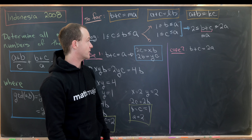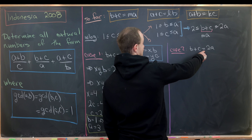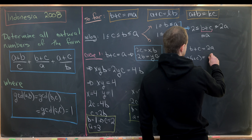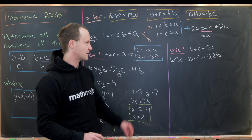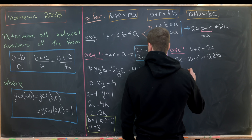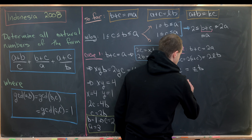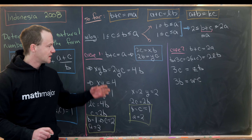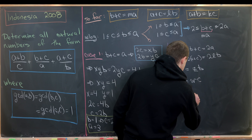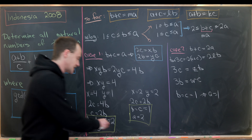Now for Case 2, B+C = 2A. Adding 2C to both sides gives B+3C = 2(A+C) = 2L·B, so 3C = Z·B, a multiple of B. Playing the same game gives 3B = W·C. A reduction similar to before yields only one possibility: B = C = 1. Since B+C = 2A, that means A = 1 as well. So the third solution set is A = B = C = 1.